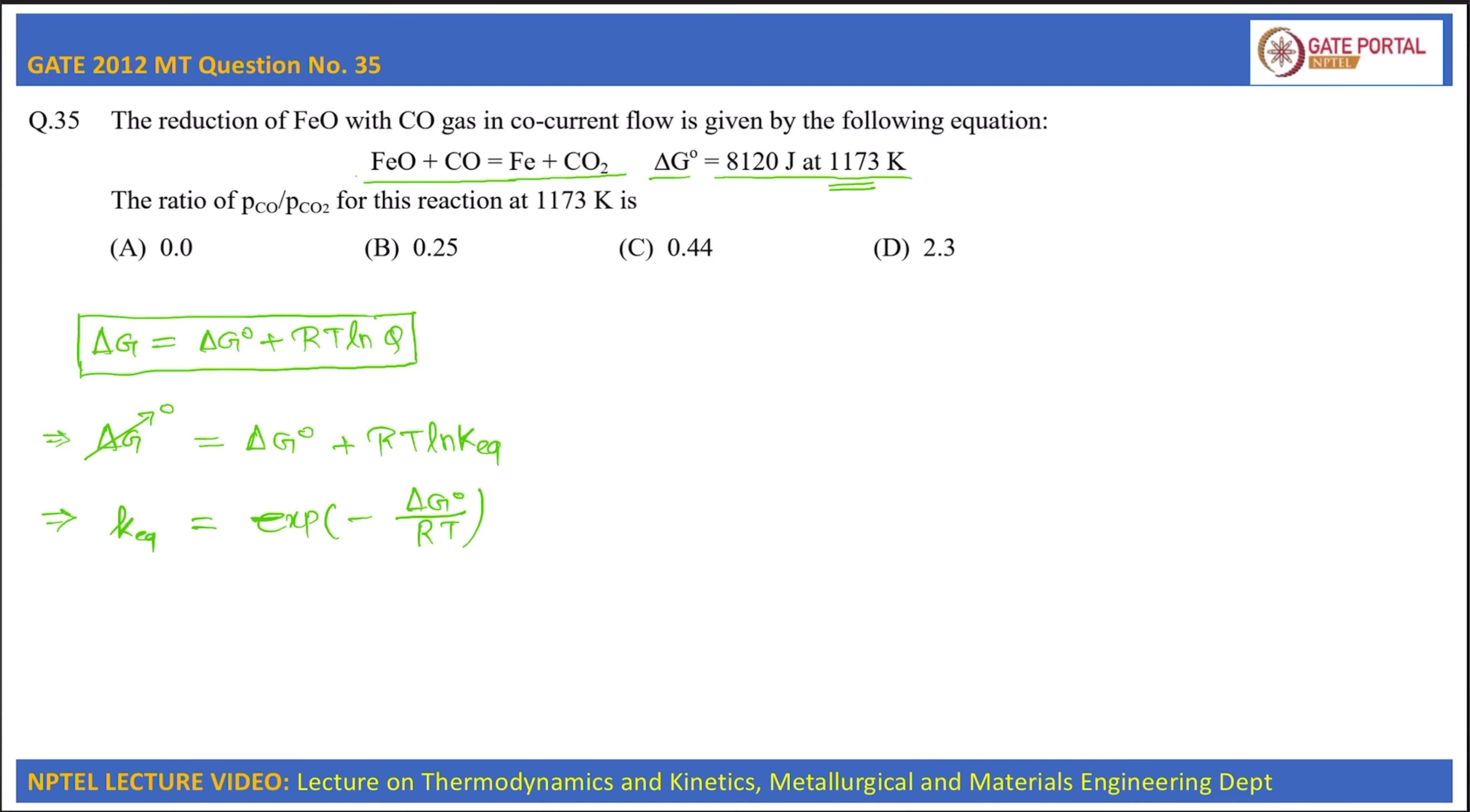Now for this given reaction, the K equilibrium will be activity of Fe into partial pressure of CO2 divided by activity of FeO into partial pressure of CO. The activity of Fe and activity of FeO will be 1, so K equilibrium will be ratio of PCO2 divided by PCO.